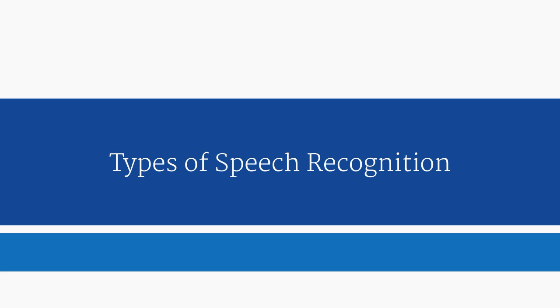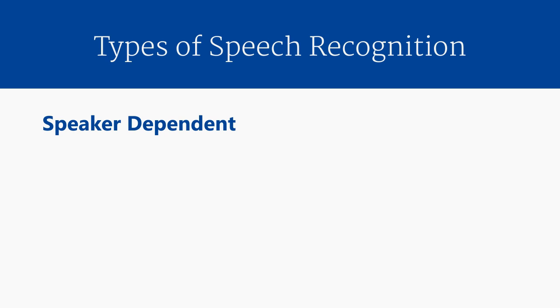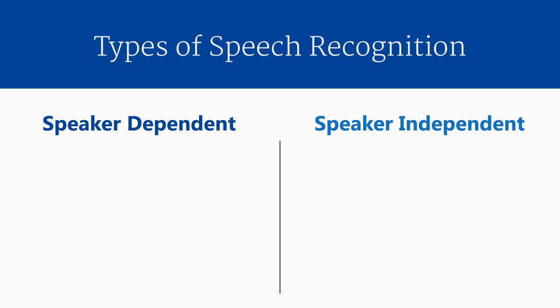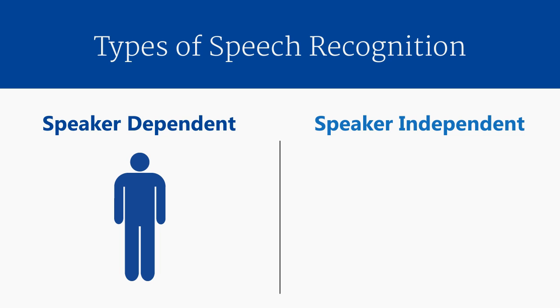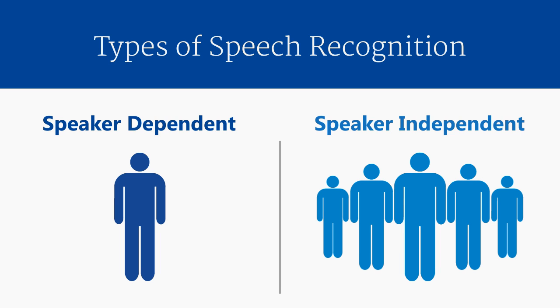Speech recognition can be broken up into two broad categories: speaker-dependent and speaker-independent. The difference between them is that speaker-dependent software learns how a particular user speaks and adapts to that user, whereas speaker-independent software is designed to understand a wide range of users, even if they have never used the system before.